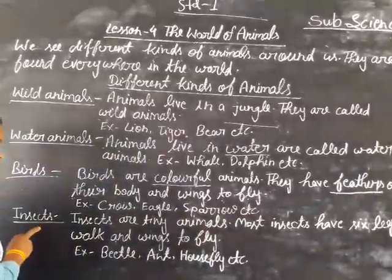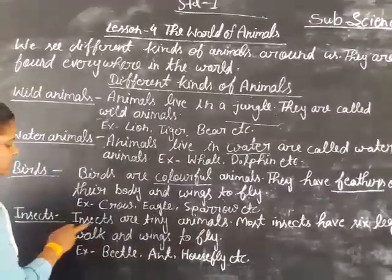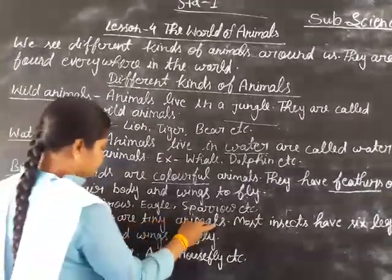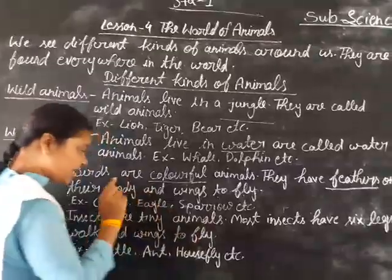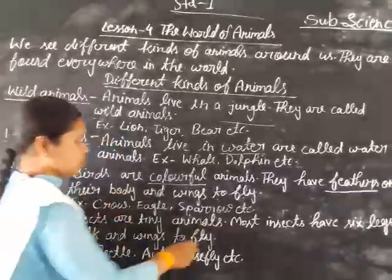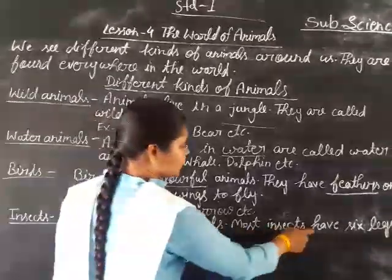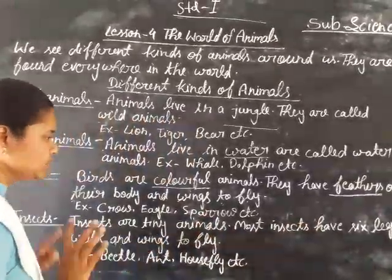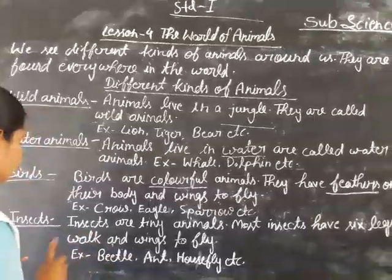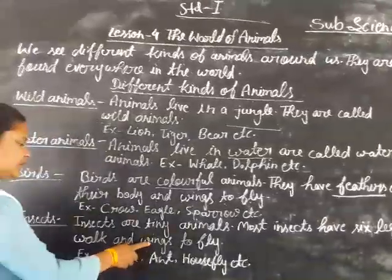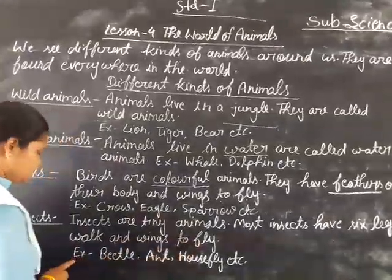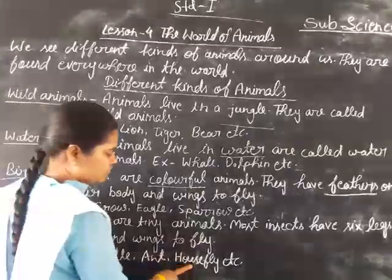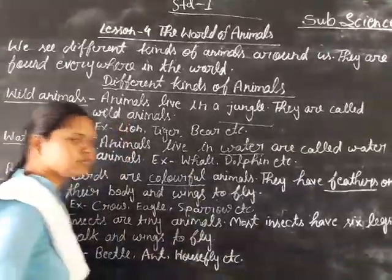Insects are tiny animals. Most insects have 6 legs to walk and wings to fly. And some of them bite or can be seen inside the house.